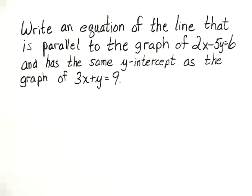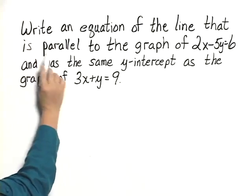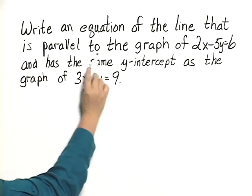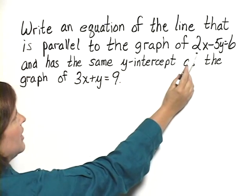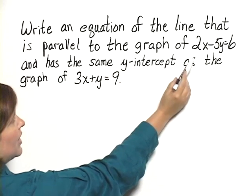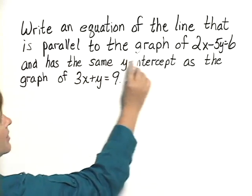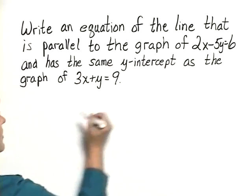In order to find an equation of a line, we need a slope and we need a y-intercept. We can get the slope from this phrase here, parallel to the graph of 2x minus 5y equals 6. If we know the slope of this line, then we also know the slope of the line we're looking for since it's parallel to this graph. So let's start by finding the slope of this line.